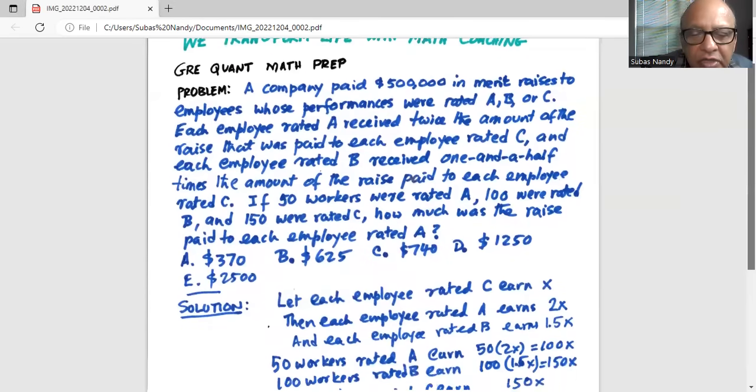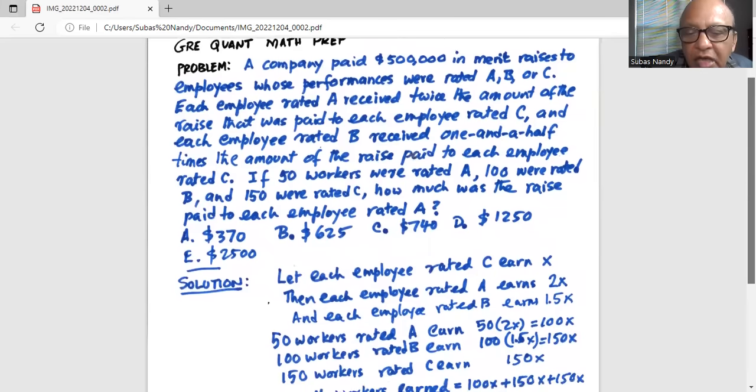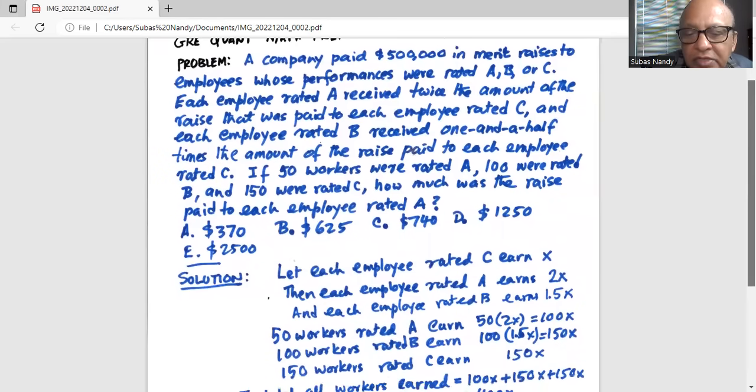So there are 50 employees who were rated A, so they earned 50 times 2X is 100X. There are 100 workers who are rated B and they earned 100 times 1.5X, which is 150X. And 150 workers were rated C who earned 150X.